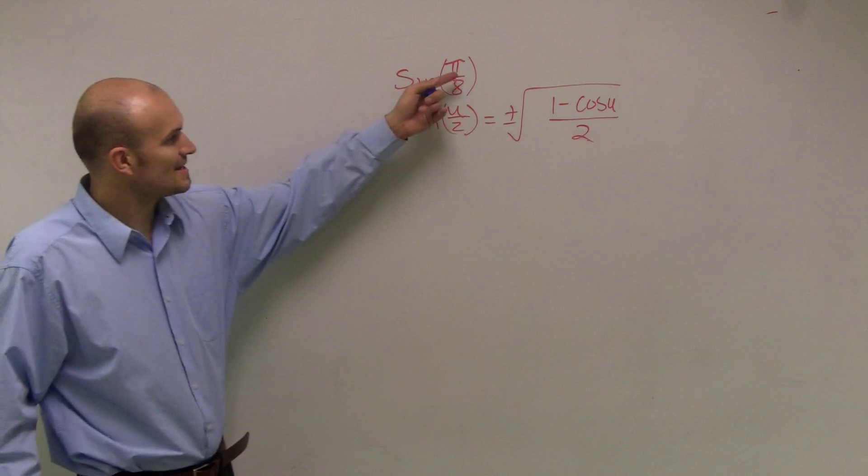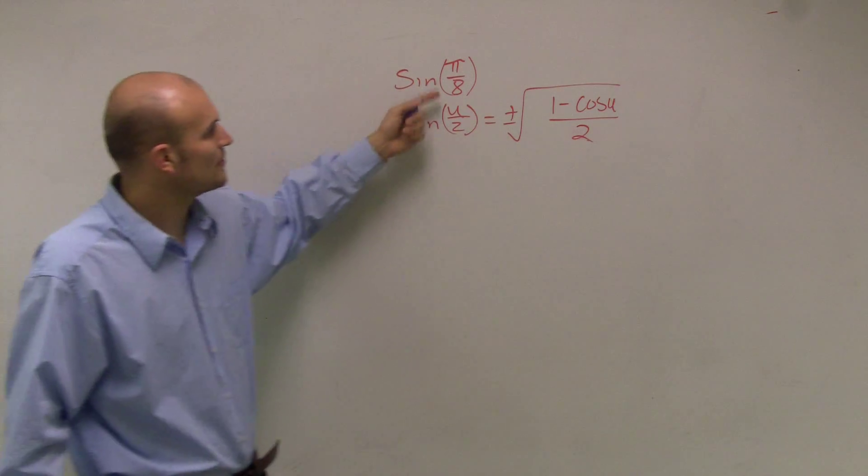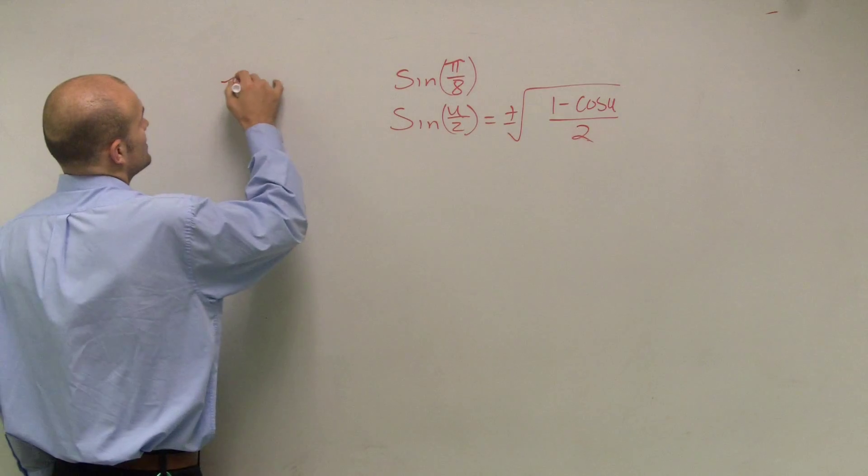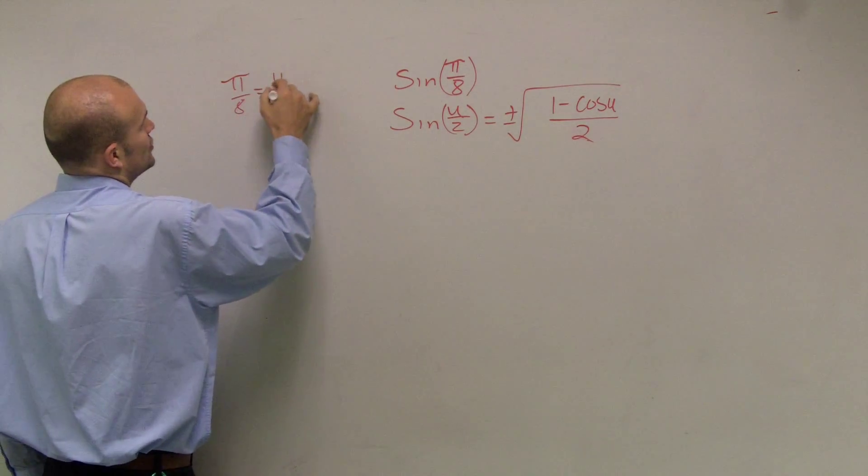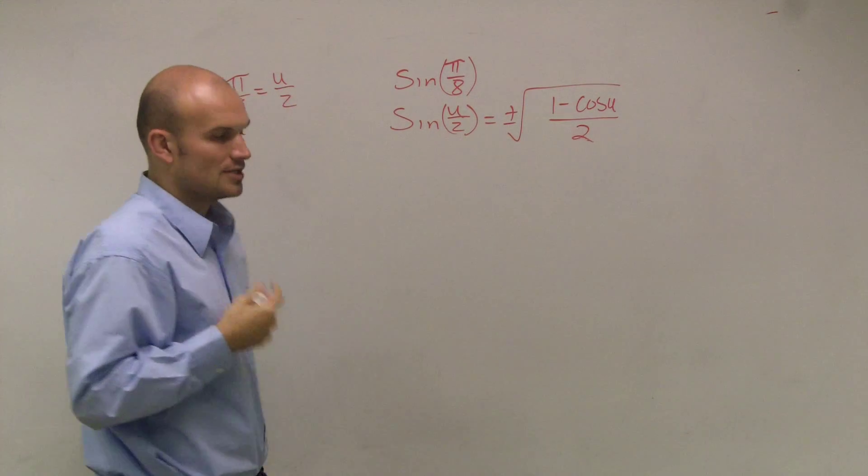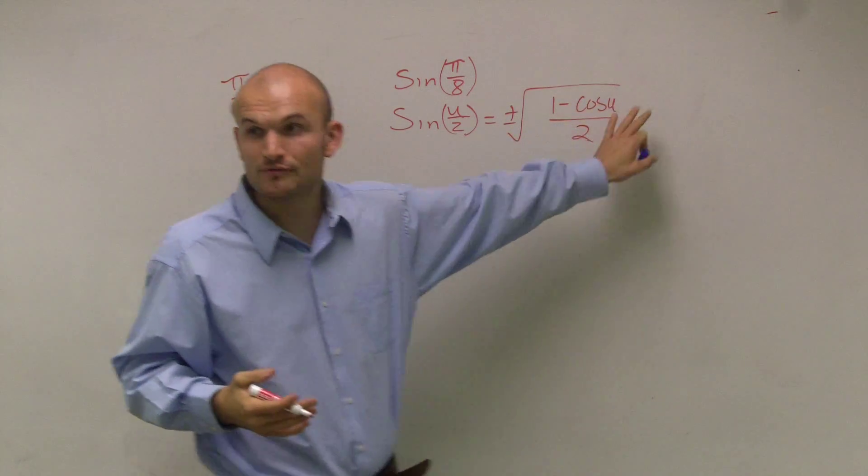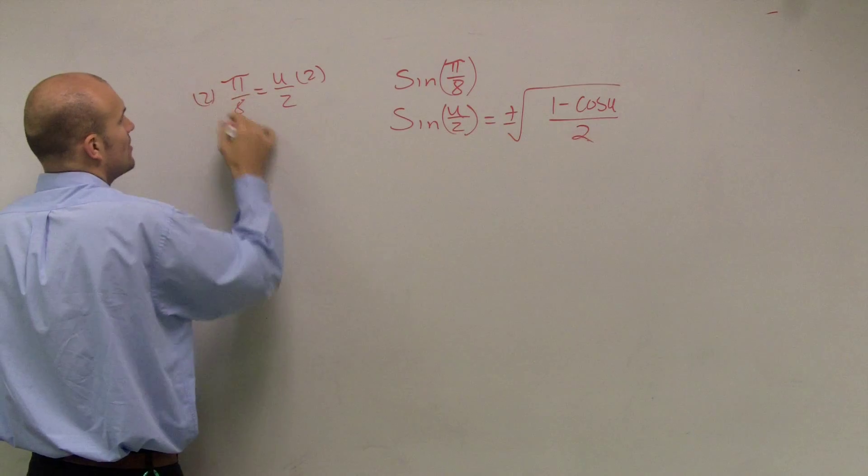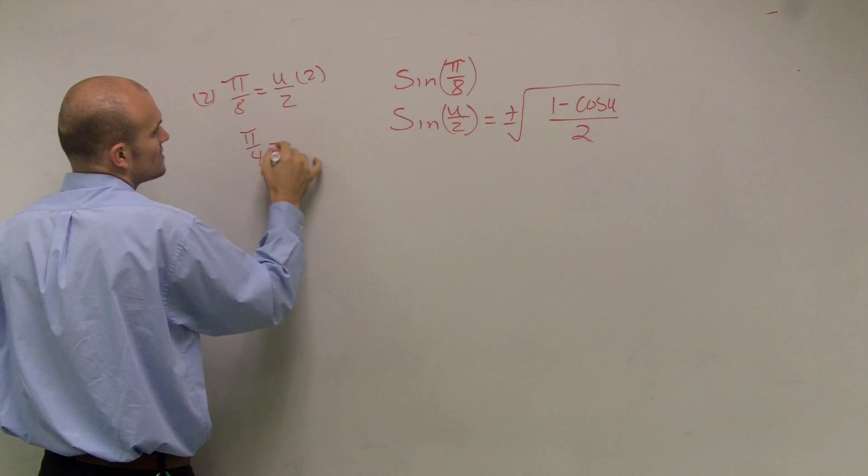Therefore, what we're saying is in this problem, we have u divided by 2 is equal to pi over 8. So pi over 8 equals u divided by 2. Therefore, if I need to find the value of u to plug it in for cosine, I need to multiply by 2 on both sides, and I get pi over 4 equals u.